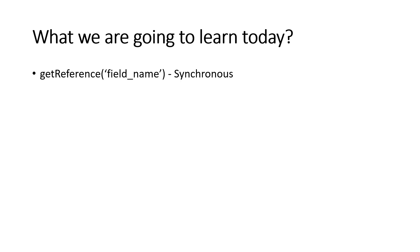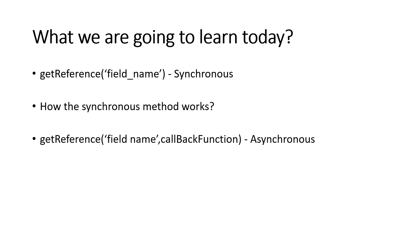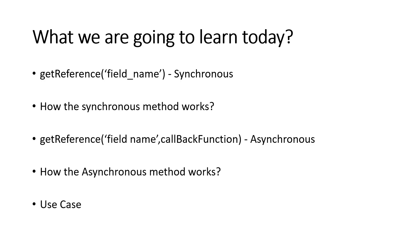There are two ways you can declare getReference. The first is the synchronous way, where getReference accepts only one parameter — the field name. We'll discuss what synchronous and asynchronous mean. The second way is declaring getReference with two parameters: the field name and a callback function. The two-parameter version is the one recommended by ServiceNow, and it is the asynchronous way. Finally, I'll do a use case so you can see how it actually works.